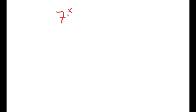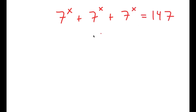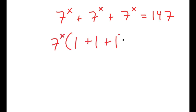All right, so in this video I'm going to solve the equation 7 to the power of x plus 7 to the power of x plus 7 to the power of x is equal to 147. So to start, I'm going to factor out 7 to the power of x. So I get 7 to the power of x times 1 plus 1 plus 1 is equal to 147.